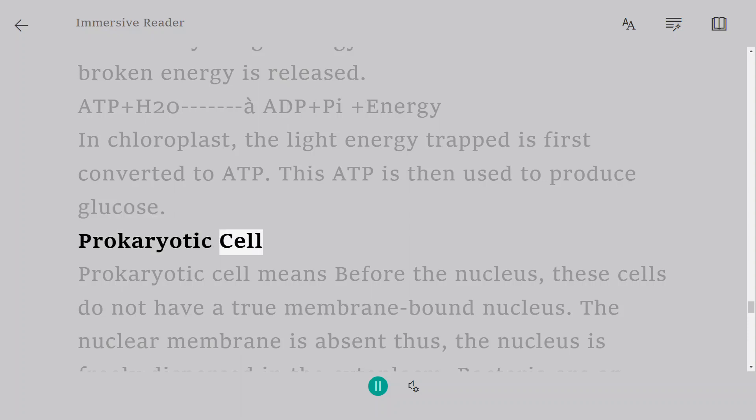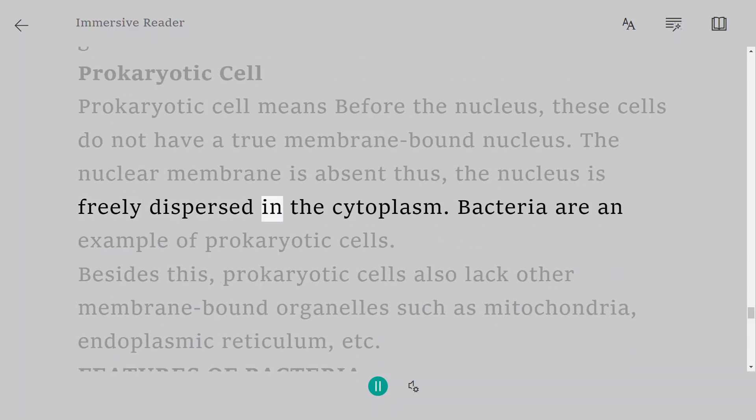Prokaryotic cell. Prokaryotic cell means before the nucleus, these cells do not have a true membrane-bound nucleus. The nuclear membrane is absent thus, the nucleus is freely dispersed in the cytoplasm.